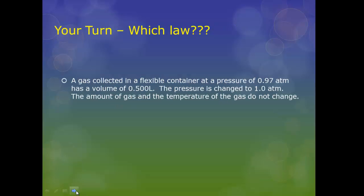What we want you to do is try another practice problem on your own. And this practice problem has several little conditions to it. So, first of all, you should read it. A gas collected in a flexible container, that's important, at a pressure of 0.97 atmospheres, has a volume of a half a liter. The pressure has changed to one atmosphere. The amount of gas and temperature of the gas do not change.